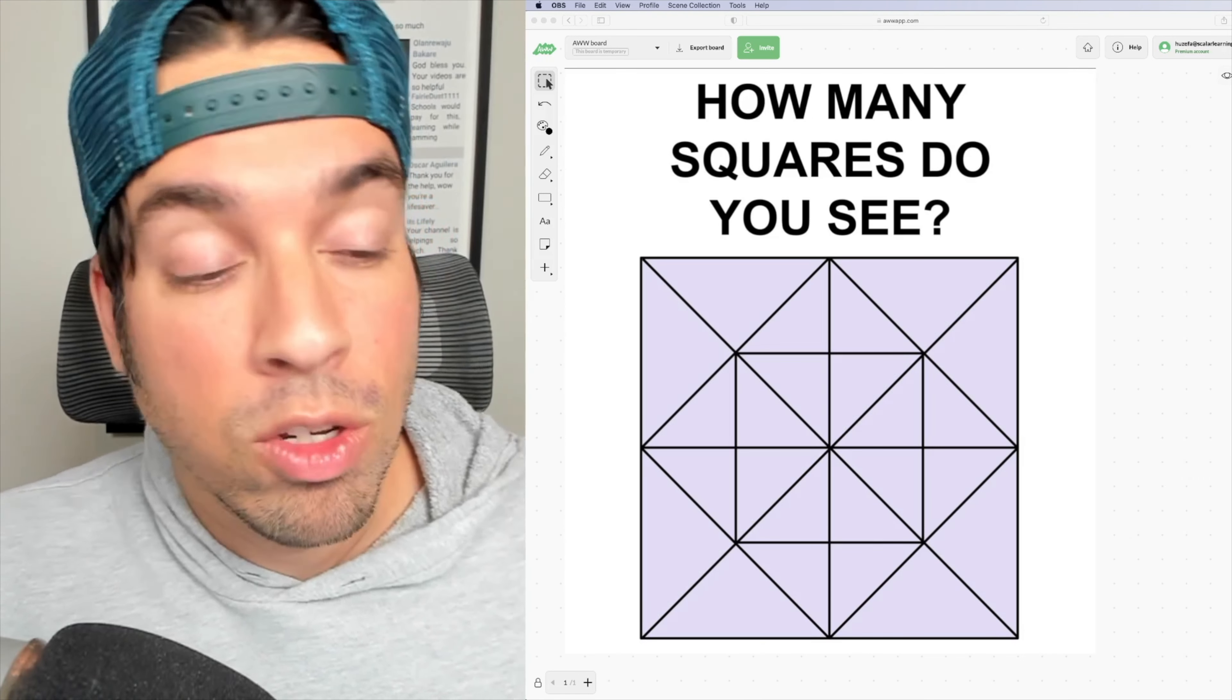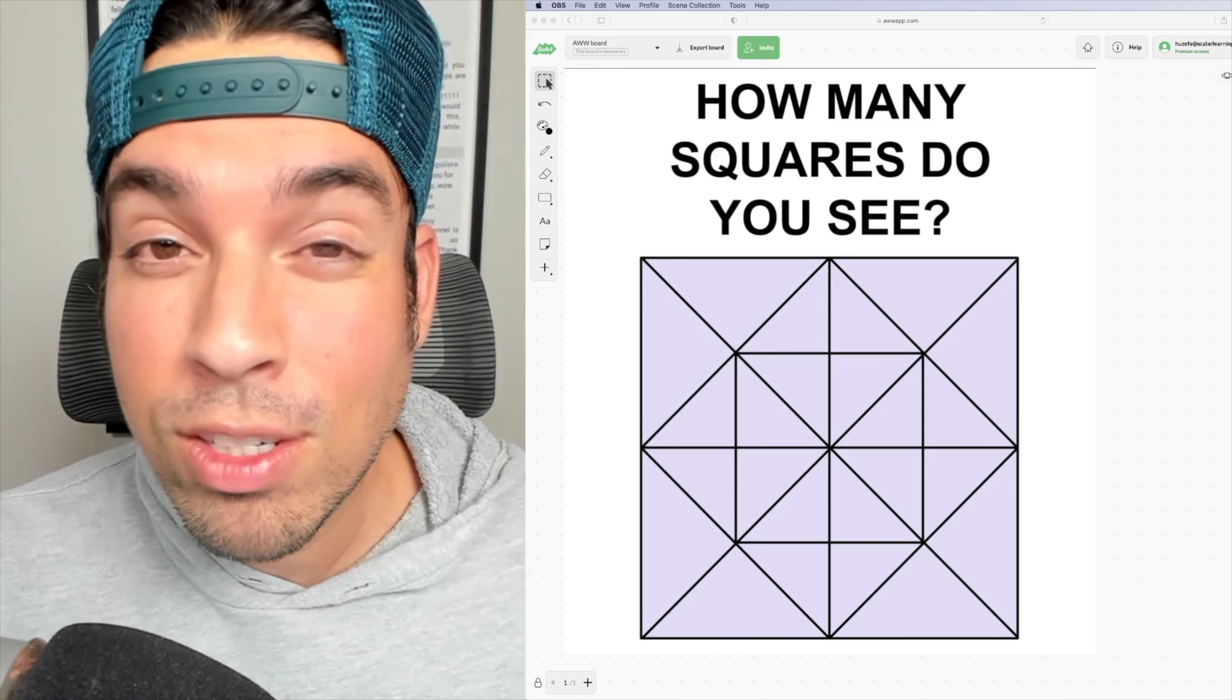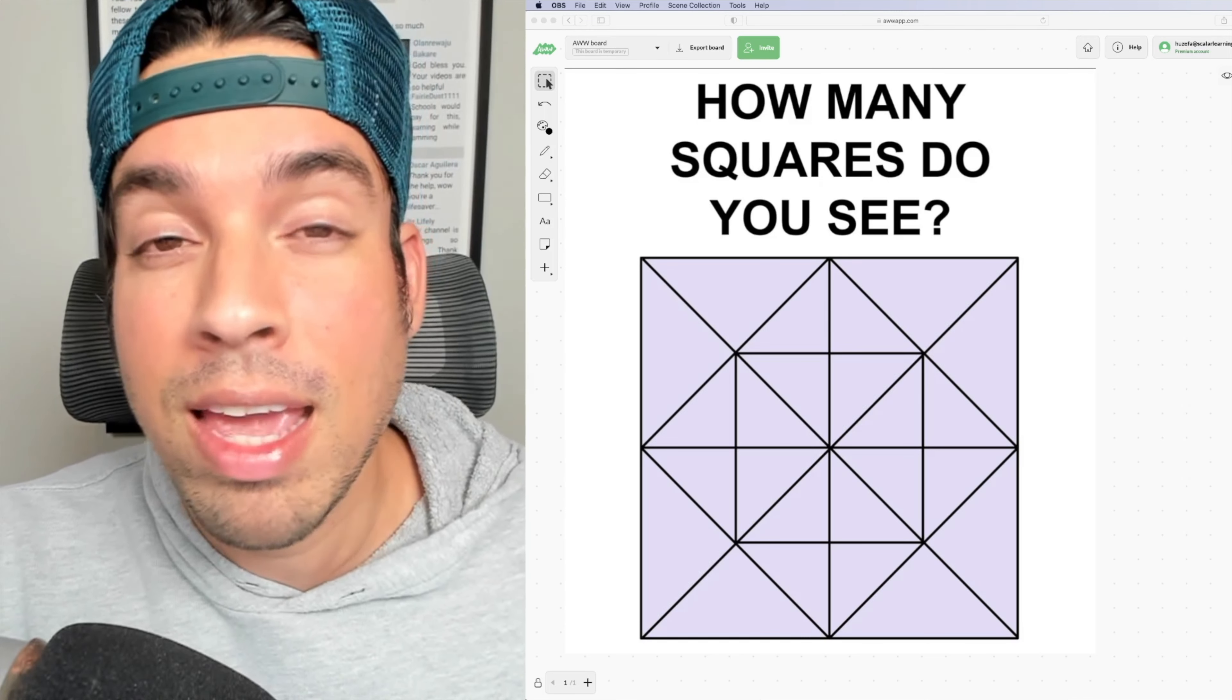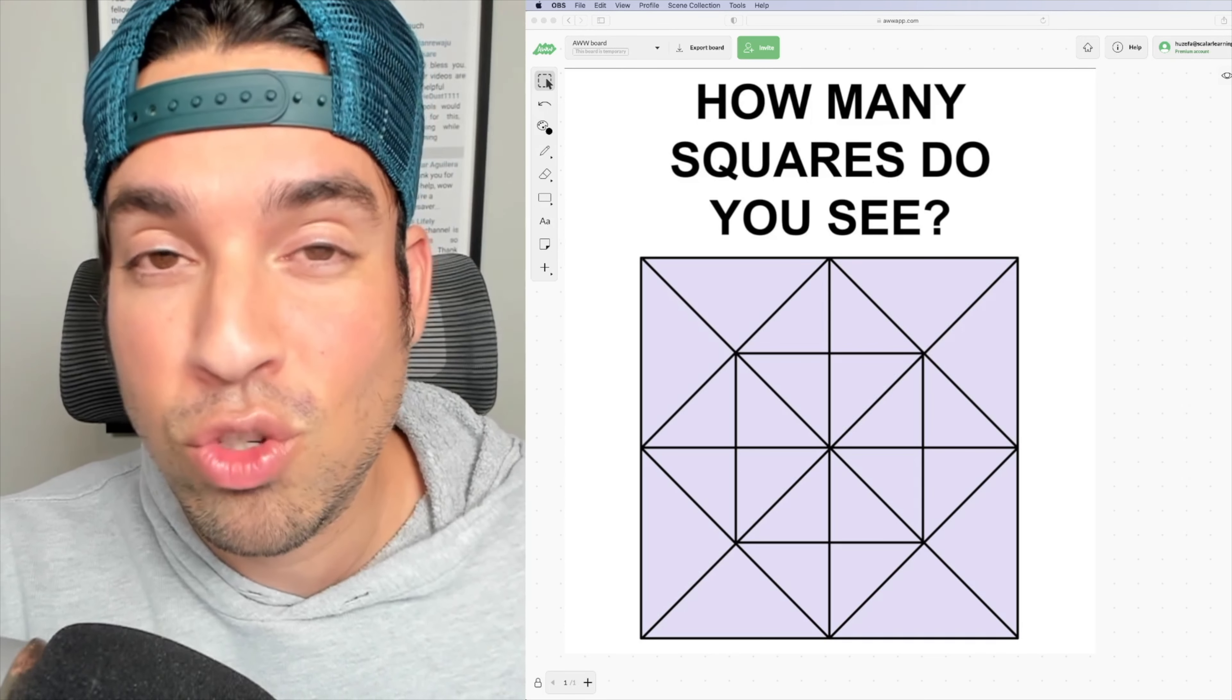Now you might be thinking, well, wait a minute, do I even know these are squares? We're just going to assume that everything that looks like a perfect square is a square.